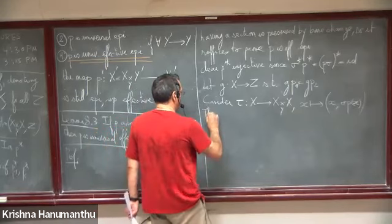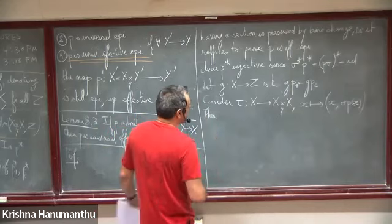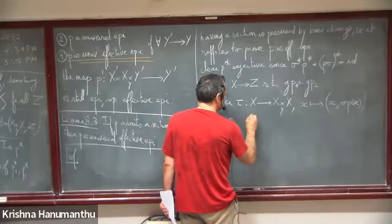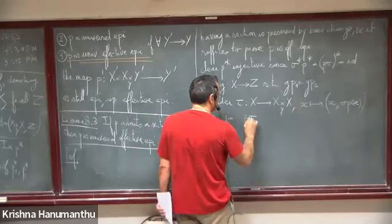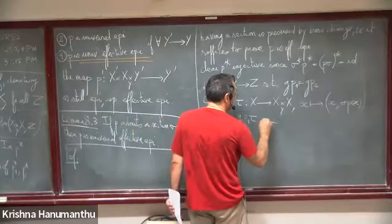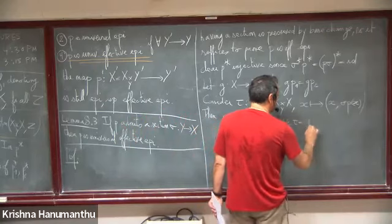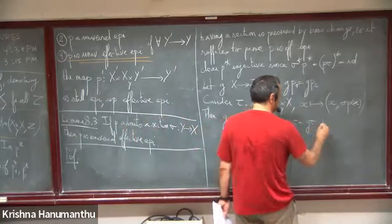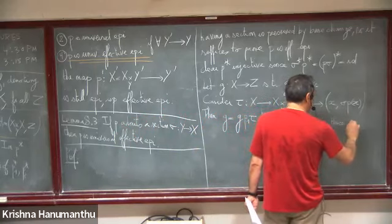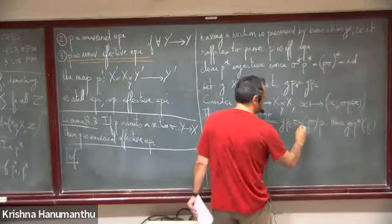Then we see that G = G∘P1∘τ, and by hypothesis this equals G∘P2∘τ = G∘σ∘P. Hence G = P-star of F where F = G∘σ. This proves that P is effective.